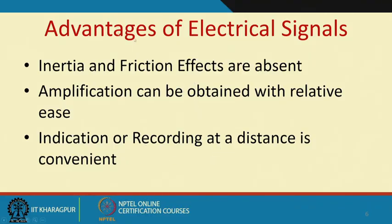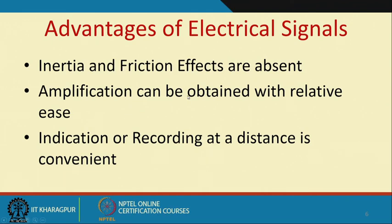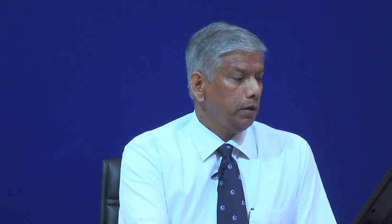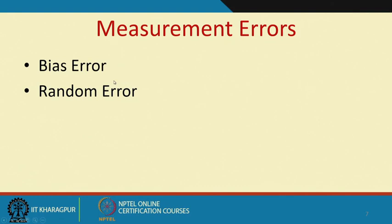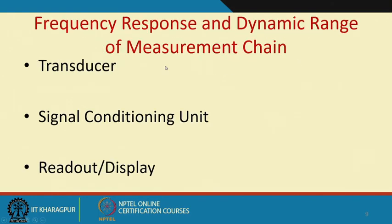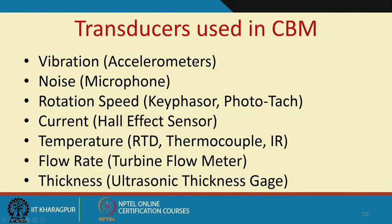The advantages of electrical signals are that inertia and friction effects are absent, and amplification can be obtained with relative ease. That is why electrical signals are very convenient, and recording or remotely monitoring is very conveniently done with electrical signals. Every transducer needs to convert the measured quantity to an equivalent electrical quantity. We will discuss errors, how errors can be mitigated, and the effect of frequency response and dynamic range on the entire measurement chain.